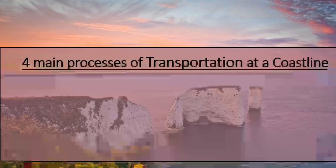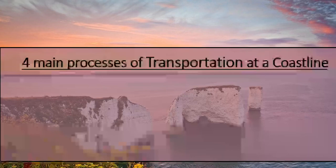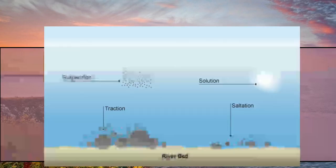Next, we're looking at the four processes of transportation. As I said earlier, there are four processes of erosion and four processes of transportation. Hopefully the number four sticks in your head, so you know you've always got four erosional processes and four transportational processes at a coastline.